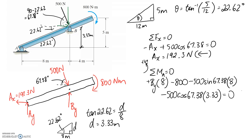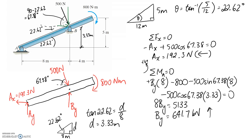That moment is going to be clockwise so it goes in as negative. Setting the sum equal to zero for equilibrium and solving for By, by summing about point A we didn't end up with Ay in the equation. Simplifying, 8 times By equals 5133 when we move the constant terms to the other side. So By equals 641.7 newtons. It came out as a positive value, which means it's in the correct direction — By is actually upward.